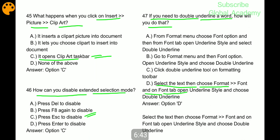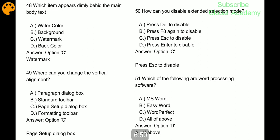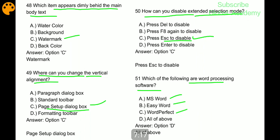On font tab, open underline style and choose double underline. Which item appears dimly behind the main body text? Watermark. Where can you change the vertical alignment? C part, page setup dialog box. How can you disable extended selection mode? Press Escape. Which are word processing softwares? MS Word, Easy Word, Word Perfect - all the above, D part.